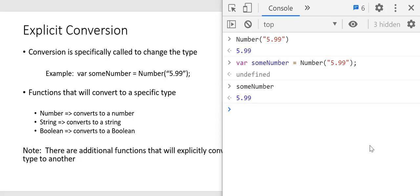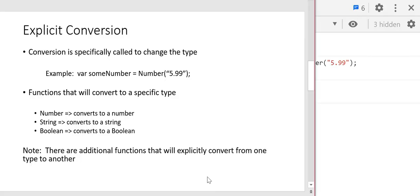In this video, we're going to study three different explicit conversion calls: Number, String, and Boolean. They're exactly the same names as the types, but you have to make sure you capitalize that first letter, so they're really easy to remember. Note: there are additional functions that will explicitly convert from one type to another, but we're just going to look at these three for this video.